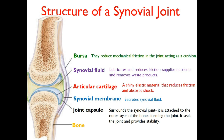The next part is the synovial membrane, which is really key because this is where synovial fluid is secreted from. Synovial fluid is a lubricant that reduces friction, and the synovial membrane is what secretes it. The next part is the joint capsule — imagine this like a plastic bag. It surrounds the synovial joint, is attached to the outer layer of the bones forming the joint, seals the joint, and provides stability by holding everything inside it.